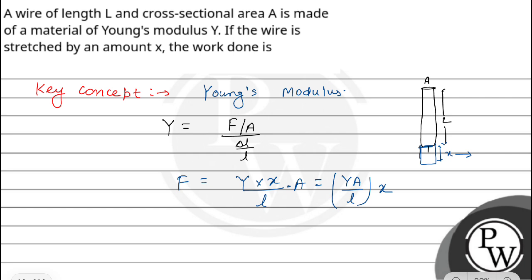Now for work done, let's say we stretch it by distance y. At this point, the force is YA by L into y. This is dy, a small element. We integrate over this y element, from here to here. This point we take as 0.